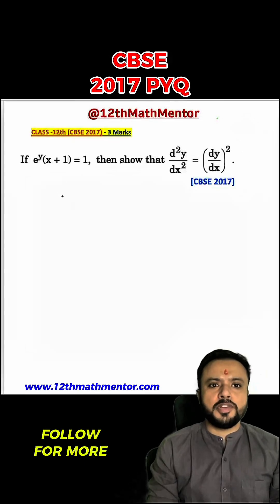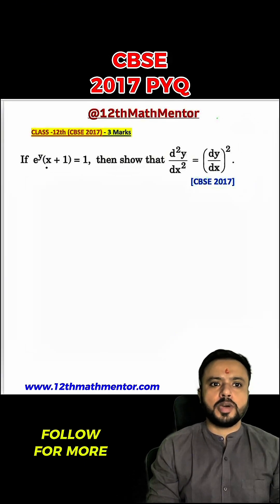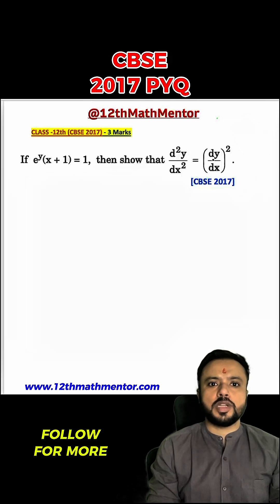This is a differentiation question from CBSE 2017, carrying 3 marks. We are given e raised to the power y into (x plus 1) is equal to 1, and we have to show that d²y upon dx² equals (dy/dx) squared.